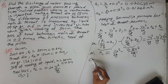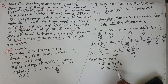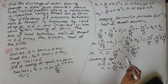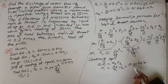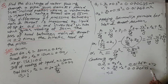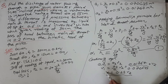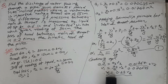Now apply the continuity equation: A1 V1 equals A2 V2. We can find V1 as (A2 upon A1) into V2. Substituting the values, V1 equals (0.01767 upon 0.070685) into V2, which gives V1 equal to 0.25 V2. We substitute this value of V1 into the pressure difference equation.